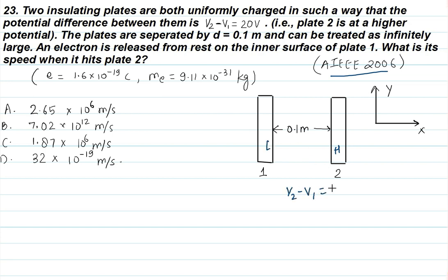V2 - V1 is equal to 20V, and plate 2 is at higher potential. The plates are separated by distance d equals 0.1 meter and can be treated as infinitely large.